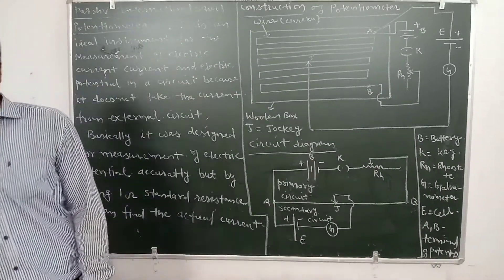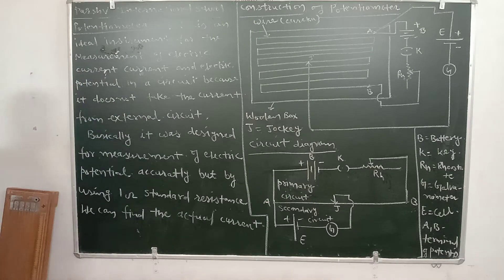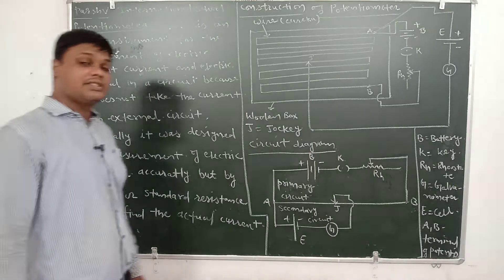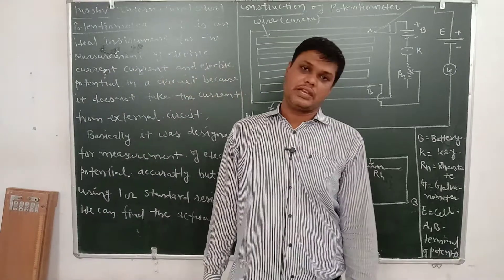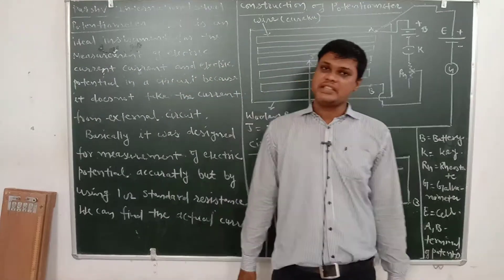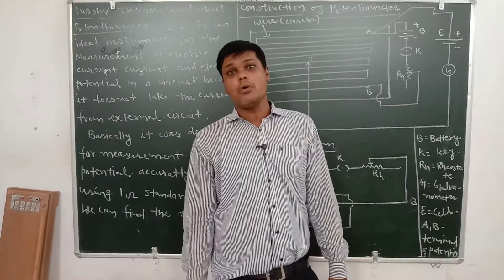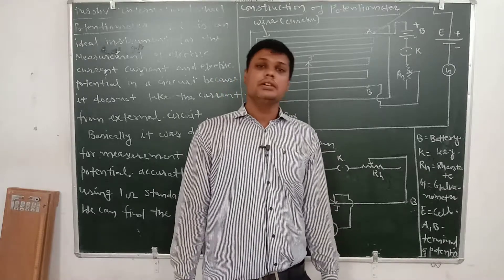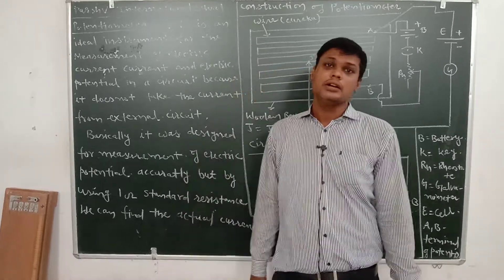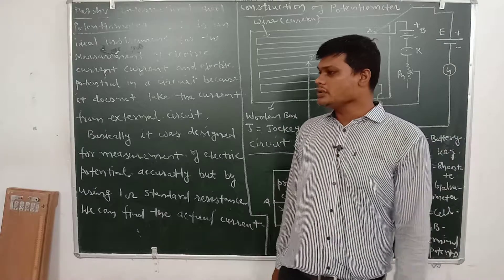The name potentiometer means this device measures the potential, because potential V is equal to i into R, where R is the resistance and i is the current.